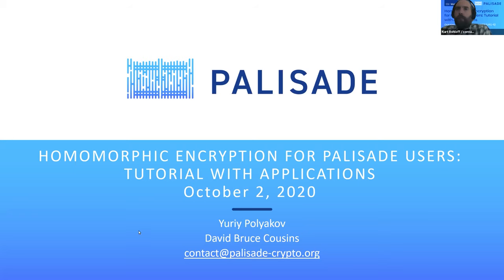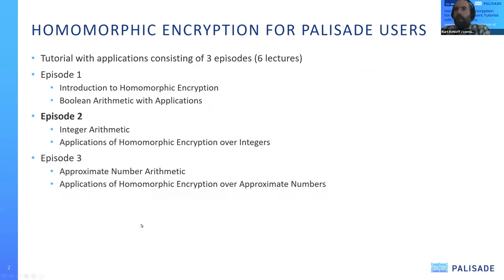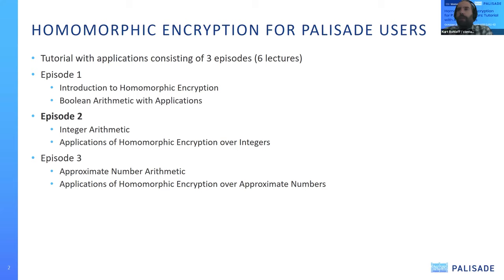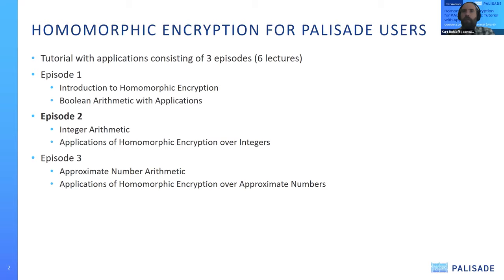We're going to be talking about a particular focus of the Palisade Library: support for some particular encryption schemes in episode two, focused on integer arithmetic operations with applications of homomorphic encryption over the integers. This was among some of the earlier aspects of homomorphic encryption for operations on integers, and we'll be talking about how we've been supporting this in Palisade, particularly for applications. Speaking first is Yuri.